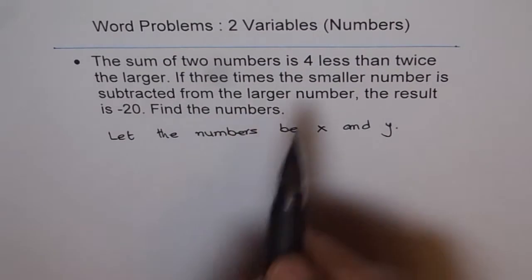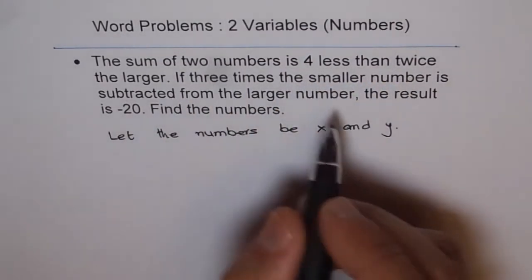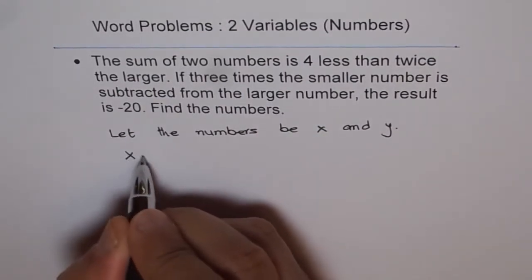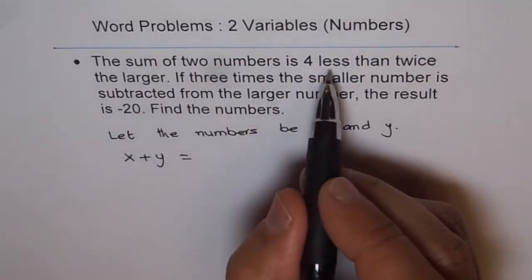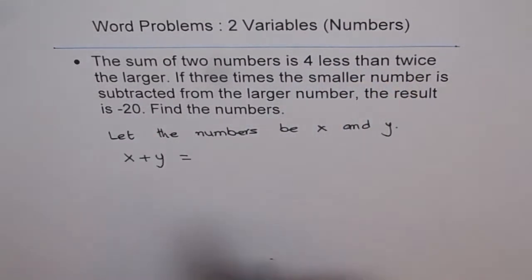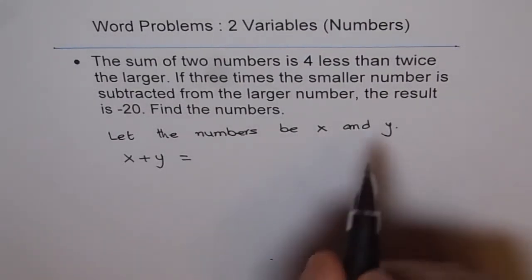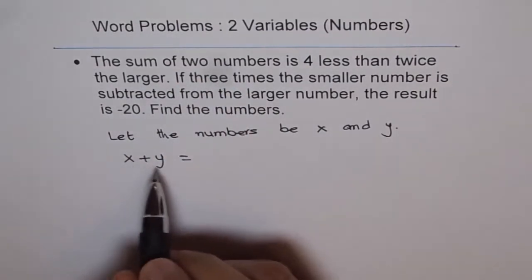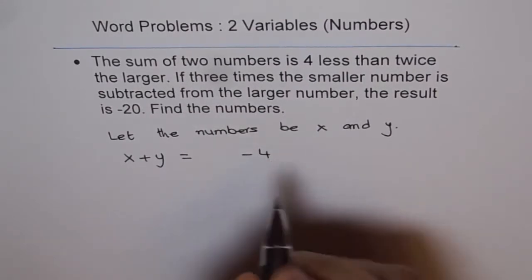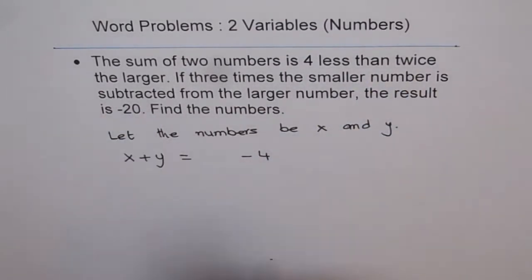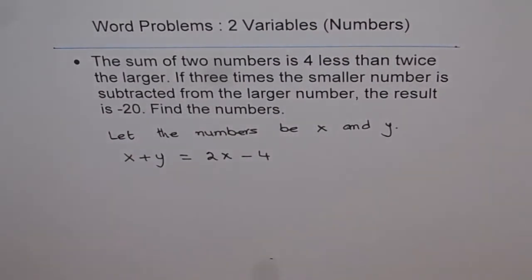The sum of two numbers is 4 less than twice the larger. Sum of two numbers means x plus y. Let us assume that x is larger than y. So it says x plus y is 4 less than twice the larger — that means minus 4 — twice the larger, so 2 times x. This is the first equation.